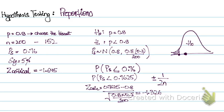So since my Z calculated is greater than my Z critical, I accept null hypothesis. So that was a hypothesis test for proportions.